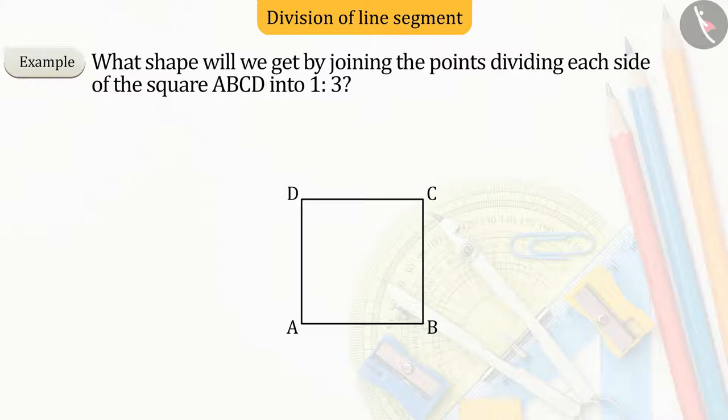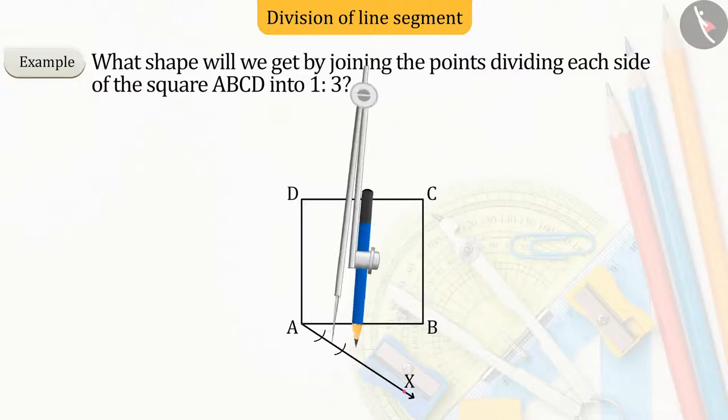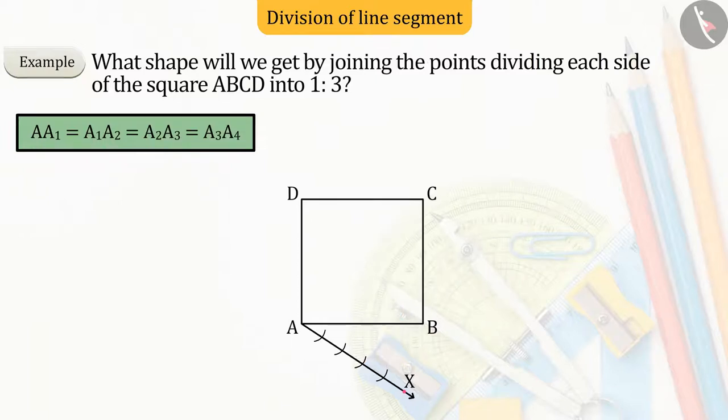Let's first divide side AB in the ratio 1:3. From point A, draw ray AX forming an acute angle, in which we make 4 equal arcs: A1, A2, A3, and A4.